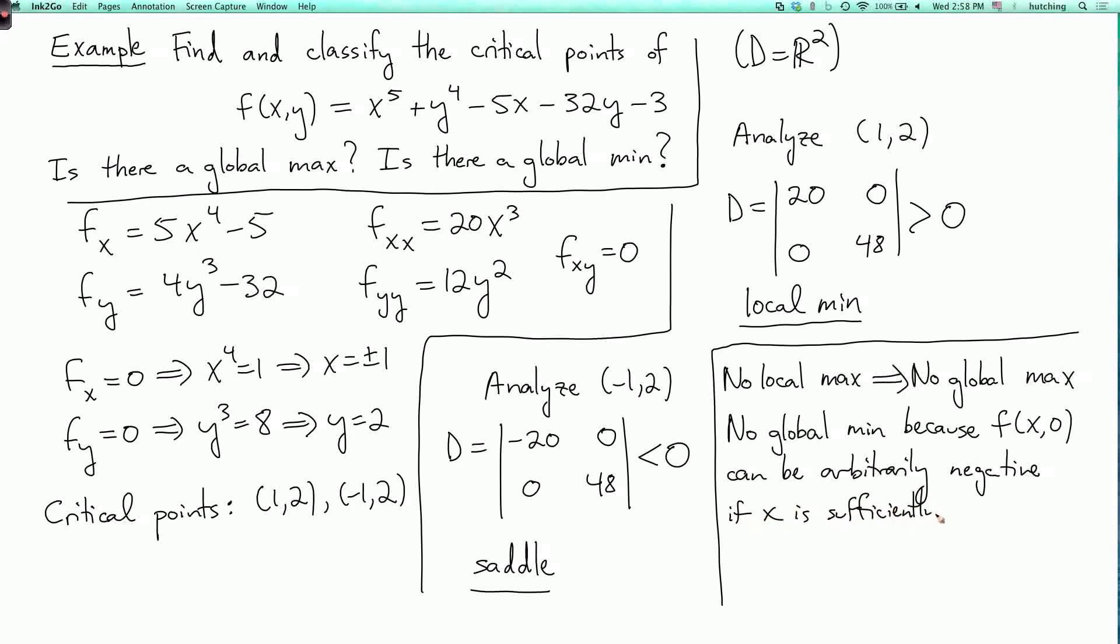So f of x comma 0 can be arbitrarily negative, a negative number of arbitrarily large absolute value if x is sufficiently negative. We can also see that there's no global max by similar reasoning. If we set x equals to 0, then this is y to the fourth plus lower order terms. By taking y sufficiently large, we can make f arbitrarily large. So that's another reason why there's no global max.